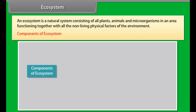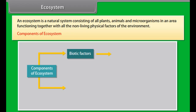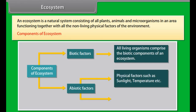An ecosystem comprises the following two components: biotic and abiotic. Abiotic factors include temperature and chemical factors such as mineral content, soil moisture, etc.